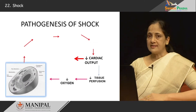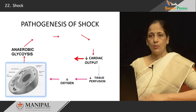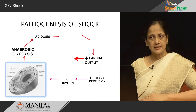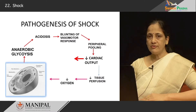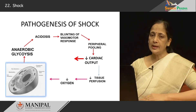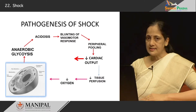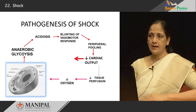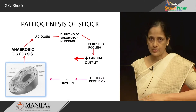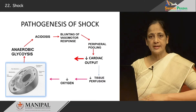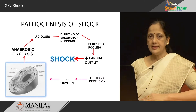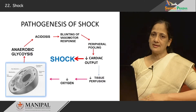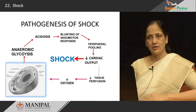There is another factor acting in the pathogenesis of shock. Whenever anaerobic glycolysis occurs and acidosis results, we find that there is a blunting of vasomotor responses. Therefore, this will result in blood pooling in the peripheral circulation. This in turn will decrease venous return to the heart and therefore reduce cardiac output, again causing decreased tissue perfusion and decreased oxygen supply to the cells. In essence, these are the various mechanisms that come together in shock, which ultimately results in multiple organ failure and death of the patient.